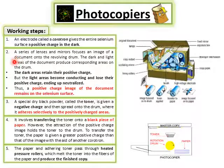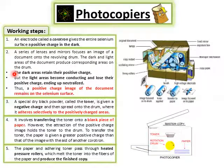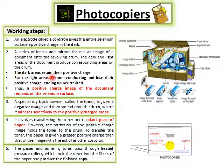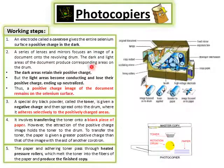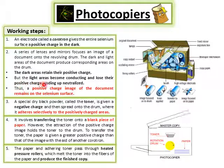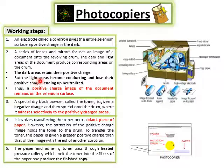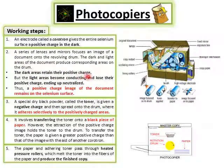In the second step, the document we want to photocopy reflects light onto the drum. There are two areas: dark areas and light areas. The dark areas retain their positive charge. Where light reflects onto the drum, the charge becomes neutral. Where light reflection does not happen — that is, the dark areas — the positive charge remains.